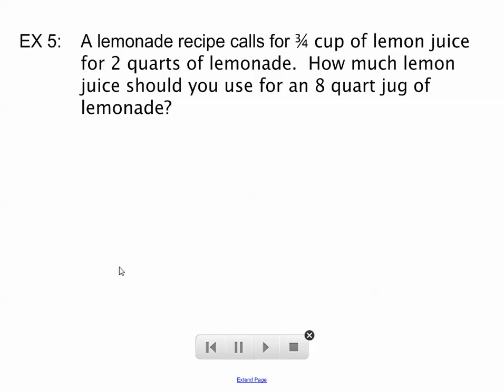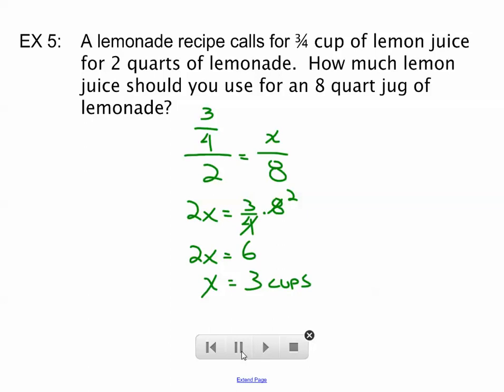All right, one more. If you want to get some lemonade along that, or set up a lemonade stand along that parade route. A lemonade recipe calls for 3 quarter cup of lemon juice for 2 quarts of lemonade. Well, that's a ratio. 3 quarter cups of lemon juice for every 2 quarts of lemonade. How much lemon juice should you use for an 8 quart jug of lemonade? We're asking how much lemon juice, so our unknown is on top, just like our 3 quarters is on top. Do our cross-products, simplifying there on the right, solve that equation. Our answer is 3 cups, meaning 3 cups of lemon juice for an 8 quart jug of lemonade.